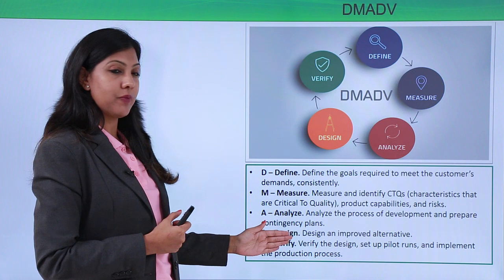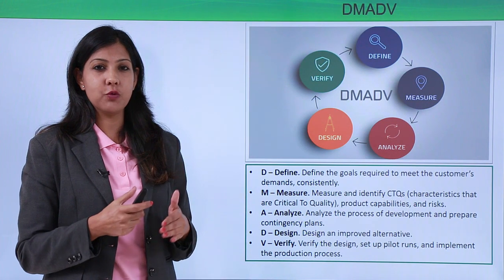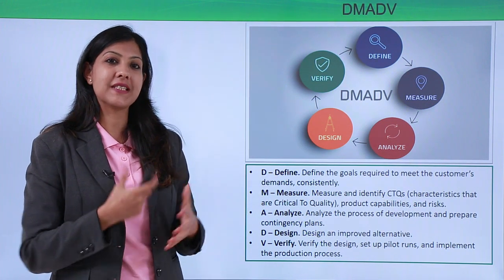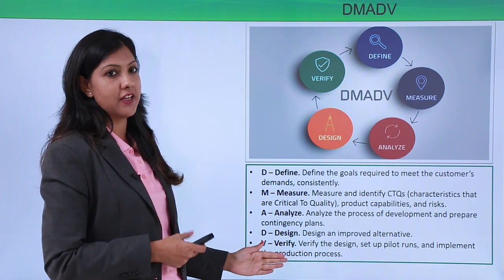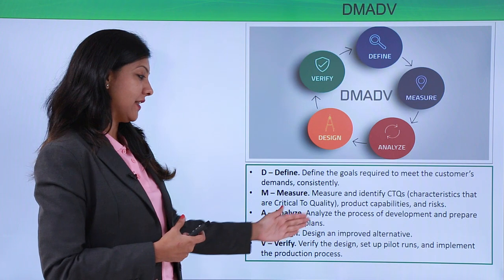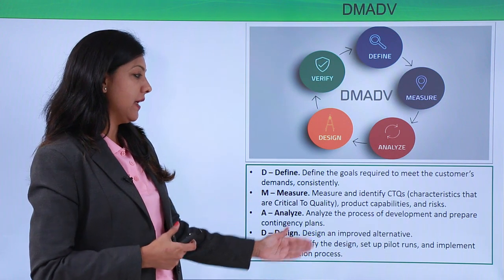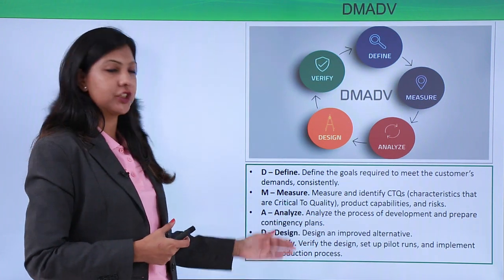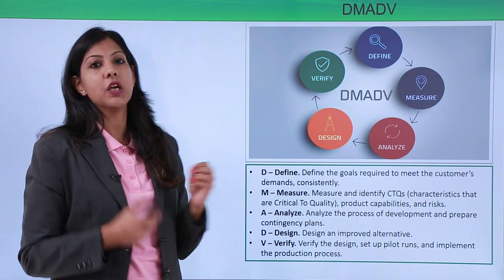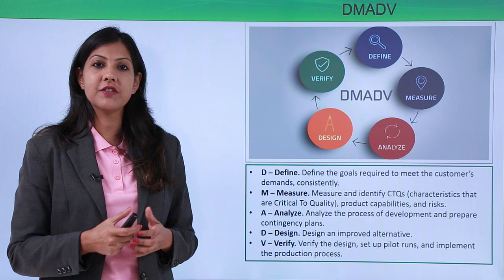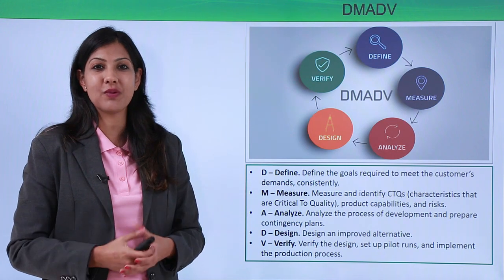D is for Design — you need to design an alternative methodology or tool, not something from the past, but a new one that will be more effective. Lastly, Verify — verify the design setup, conduct many pilot runs to see whether it is working properly, and implement the production processes. The key difference is that DMAIC is used for current processes, while DMADV is used for new processes you want to incorporate.